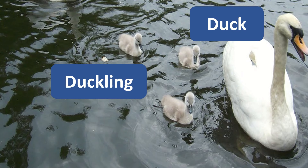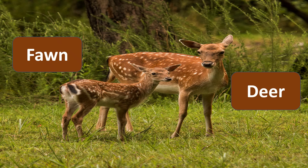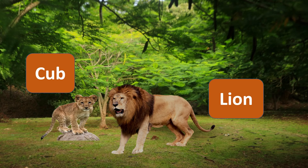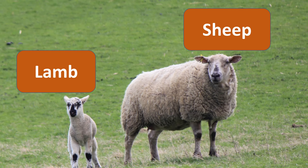Duck. Baby duck is duckling. Deer. Baby deer is fawn. Lion. Baby lion is cup. Sheep. Baby sheep is lamb.